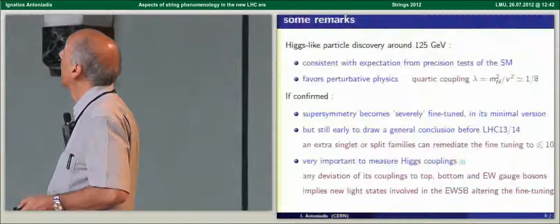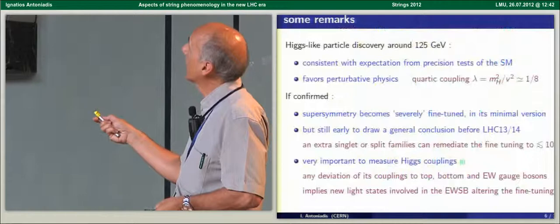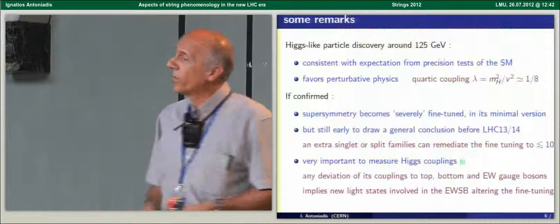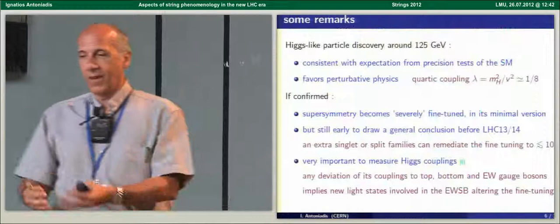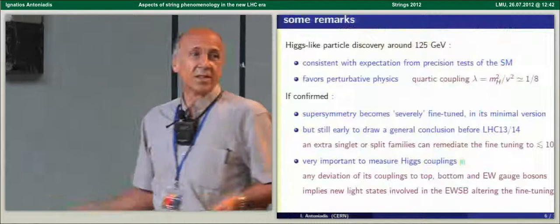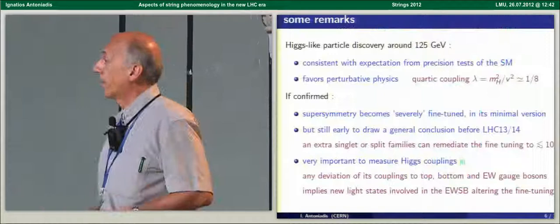And then I think the main theoretical conclusion is that it favors perturbative physics. The quartic coupling λ is about 1/8. Somehow this validates the triumph of quantum field theory which started with quantum electrodynamics. In the meantime we had QCD of strong interactions, but QCD finally was shown to be an asymptotically free theory. And now we have this Higgs sector which is the simplest quantum field theory, λϕ^4 with a perturbative coupling that continues on this trend.